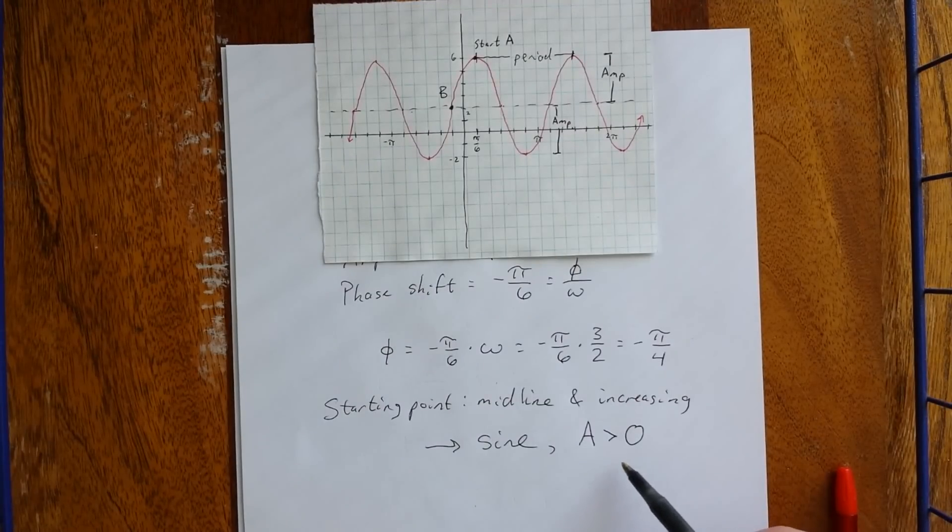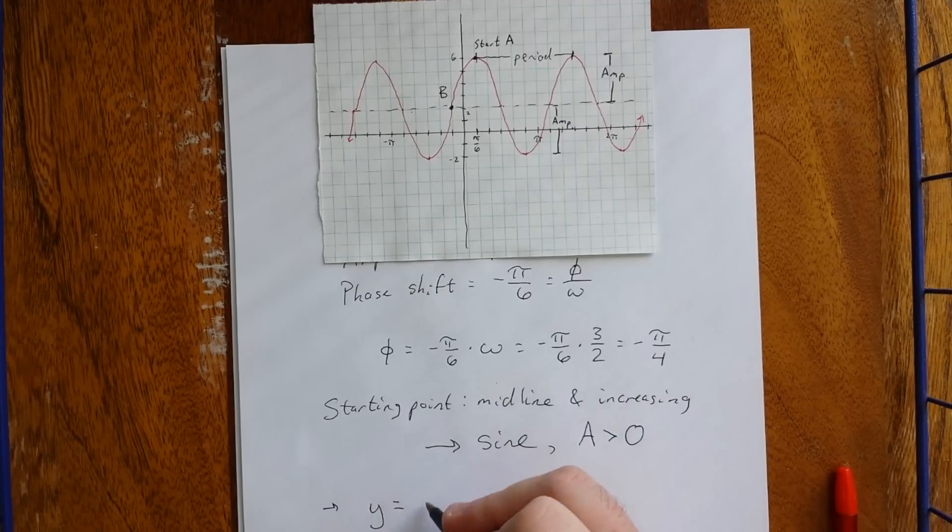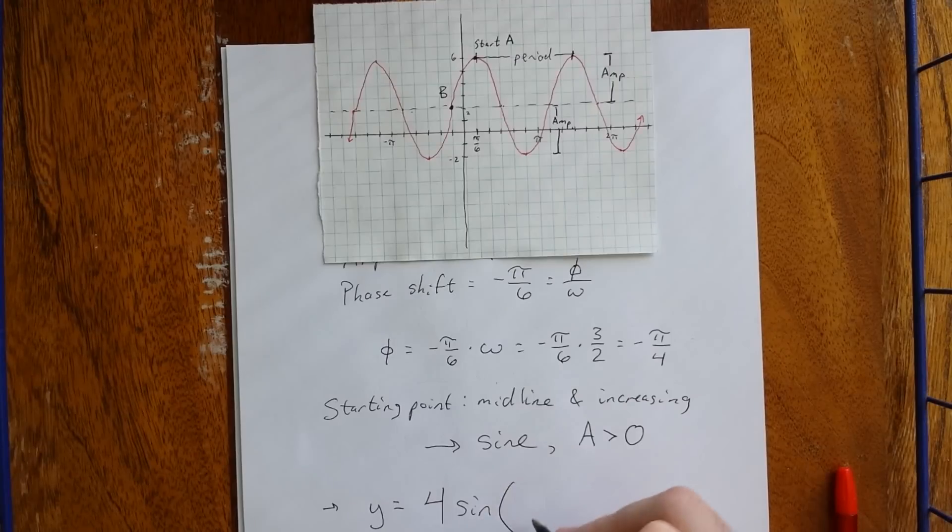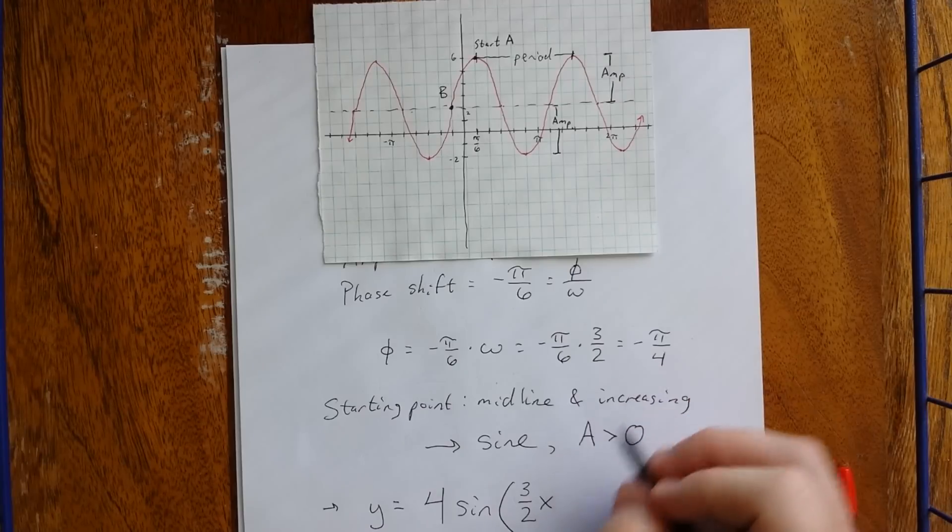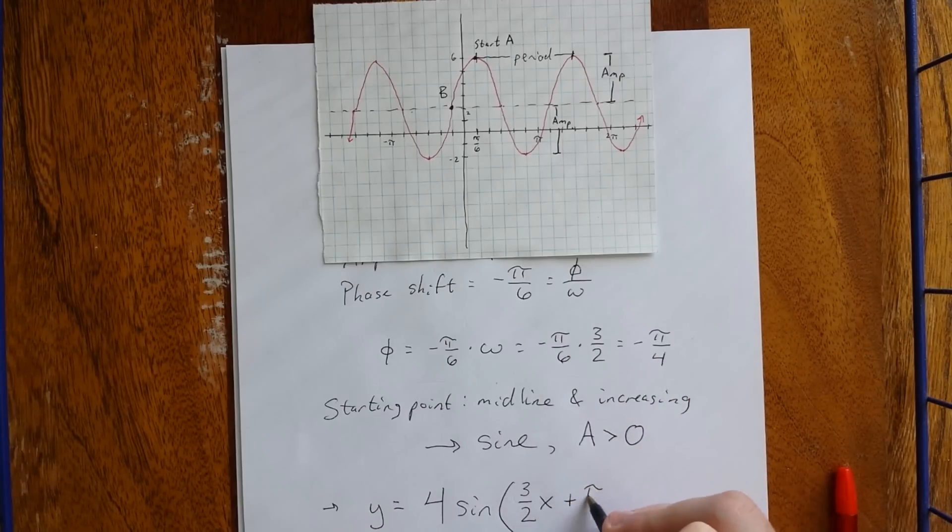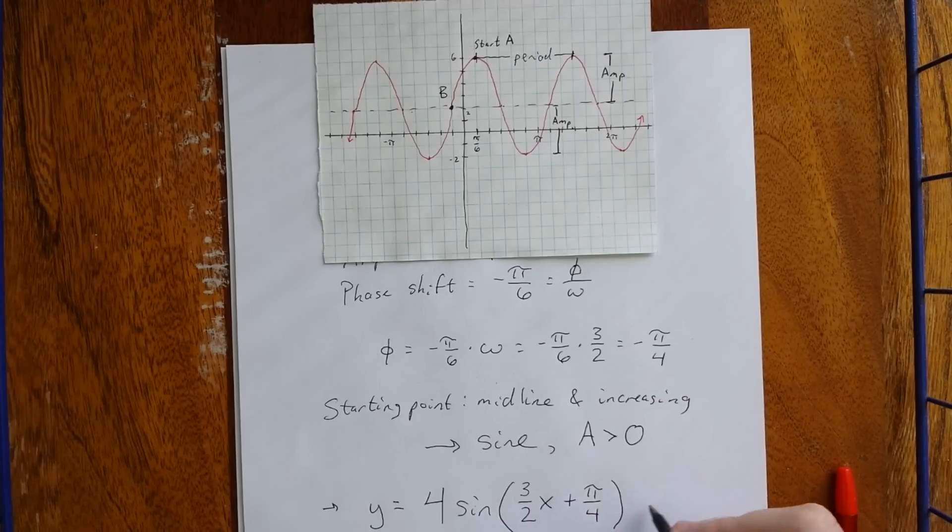So, put it all together and we get the following. Y equals A times, we know A is positive, we know the amplitude is 4, times the sine of omega, which is 3 halves, times X, minus phi, but phi is already a negative value, so we'll make that plus pi over 4, plus the midline shift, which will be plus 2. So, put it all together here as our final answer.